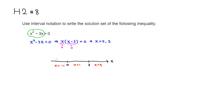We'll look at the factored form x times (x minus 3) and plug in our sample numbers. For x equals negative 1: x is negative, and negative 1 minus 3 is negative 4, so also negative. Negative times negative gives a positive value on that interval.